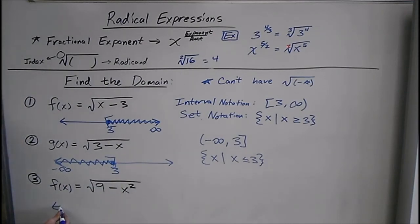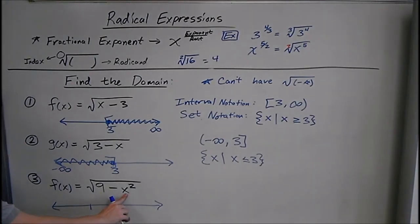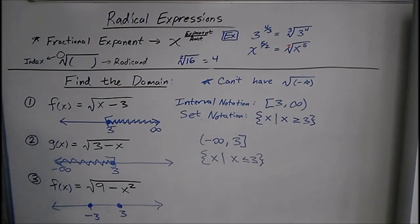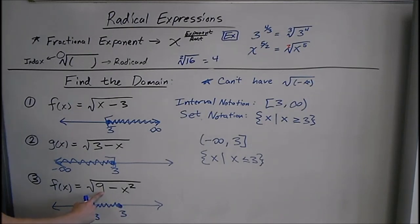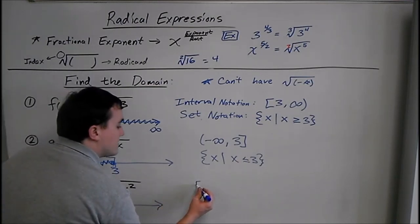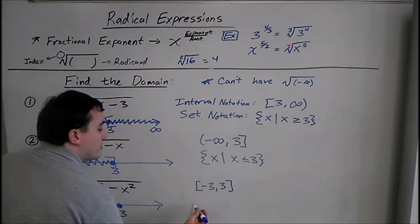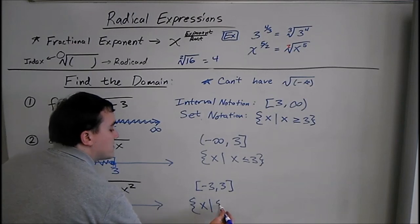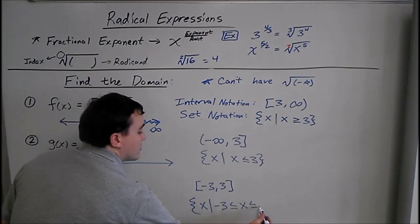For the last one, you really have to think, because you can make this 0 with two x values. You could plug in 3, because 3 squared is 9, and you could plug in negative 3, because negative 3 squared is also 9. If you plug in 0, you've got a positive under the root — that's okay. But if you plug in 4 or negative 4, the number is bigger than 9 and gives you a negative under the square root. So the domain written two ways: negative 3 to 3 with brackets, or x where negative 3 is less than or equal to x less than or equal to 3.